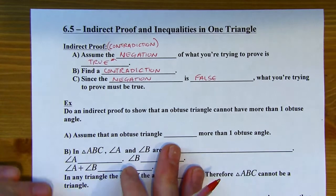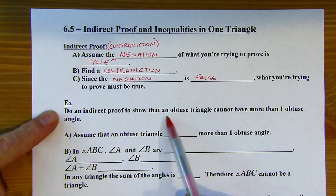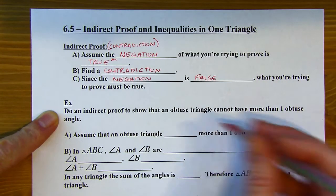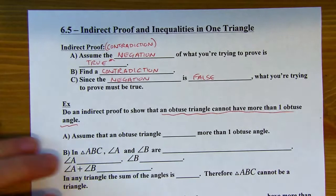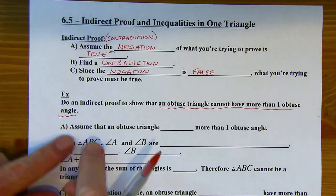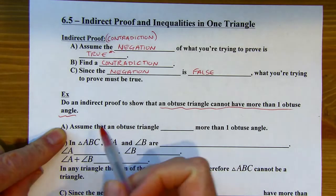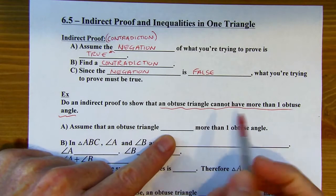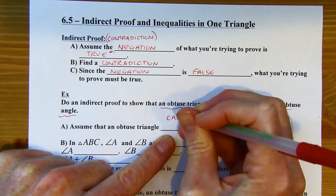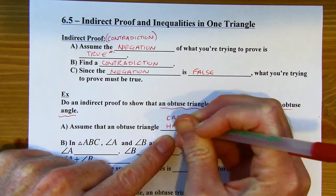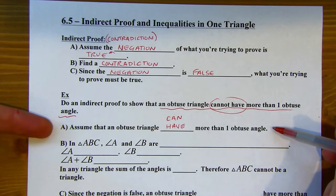Let's put this in a mathematical context. We're going to do an indirect proof to show that an obtuse triangle cannot have more than one obtuse angle. Here's what we're trying to prove, and we're going to do this with three steps: A, B, and C. First, we want to assume that the negation of this is true. So I'm going to assume that an obtuse triangle can have more than one obtuse angle.